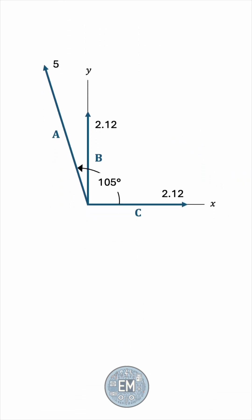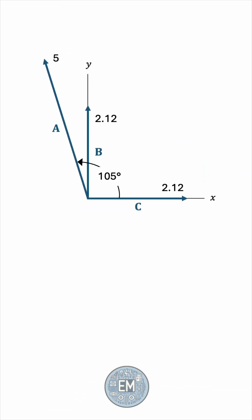We'll resolve the vectors into their x and y components. c is already in the positive x direction, and b is in the positive y direction, but a is neither purely x nor purely y. So let's resolve a into its horizontal and vertical components.